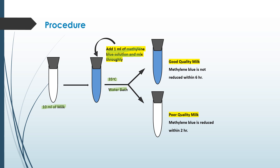Agar methylene blue ka color within 6 hours bhi change nahi hua, that means jo milk aap ke paas hai woh good quality of milk hai. Agar methylene blue ka color within 2 hours convert ho white color mein, that means jo aap ke paas milk sample hai woh poor quality of milk hai.